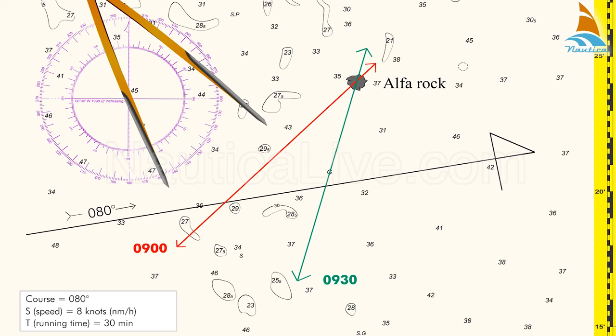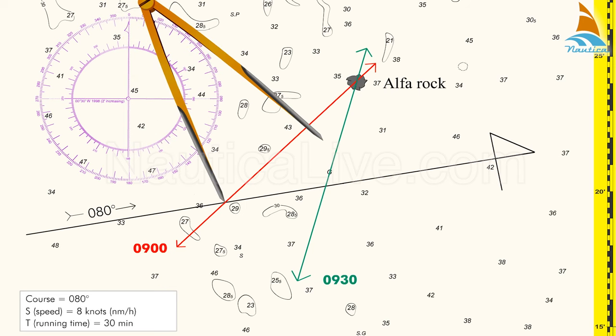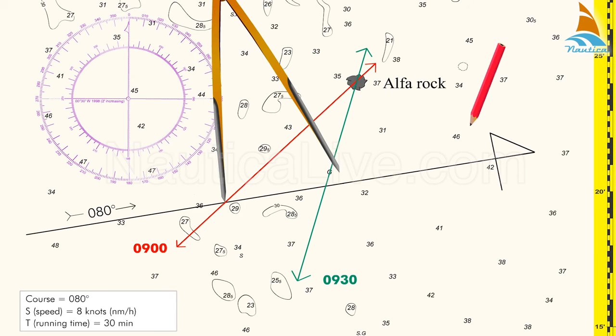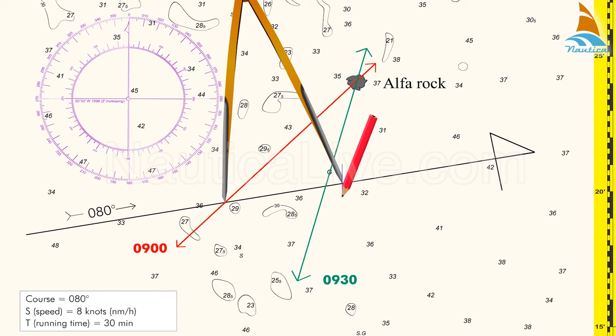We applied this span on our course, placing one leg of the dividers on the 0900 LOP intercepting the course and the other leg on the course line.